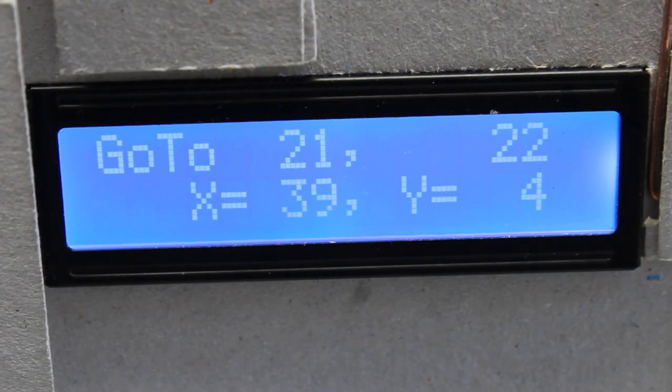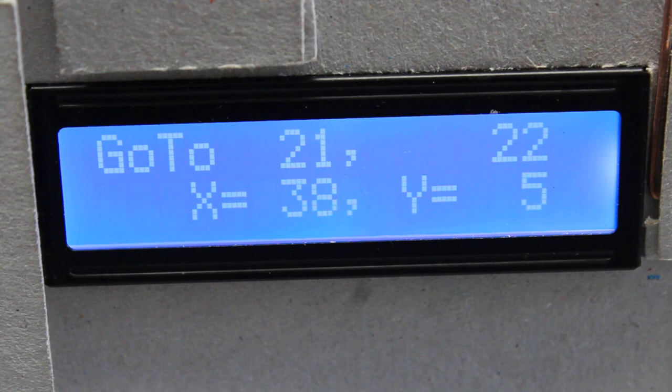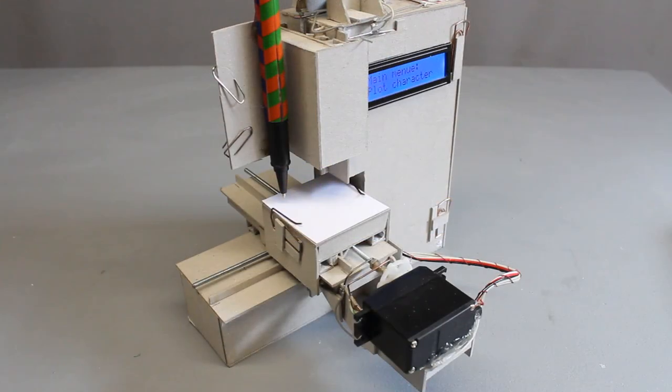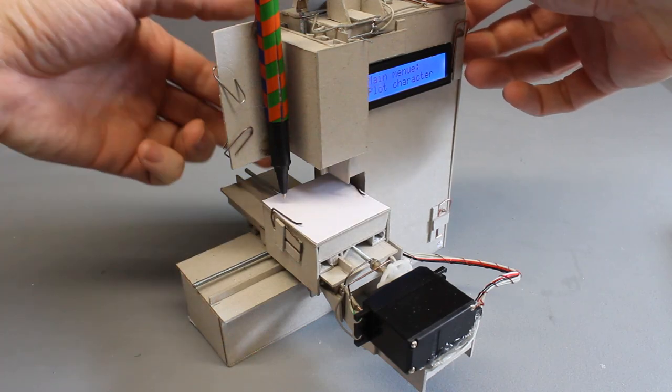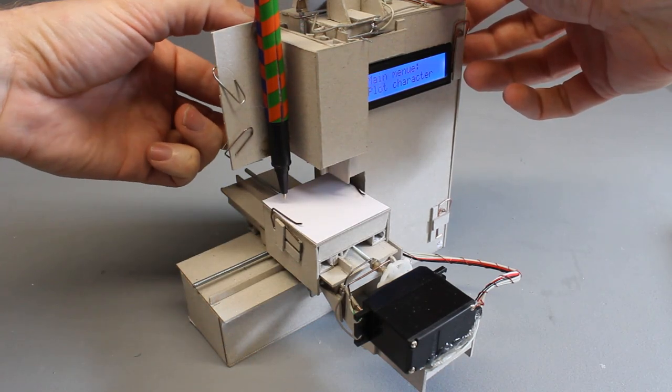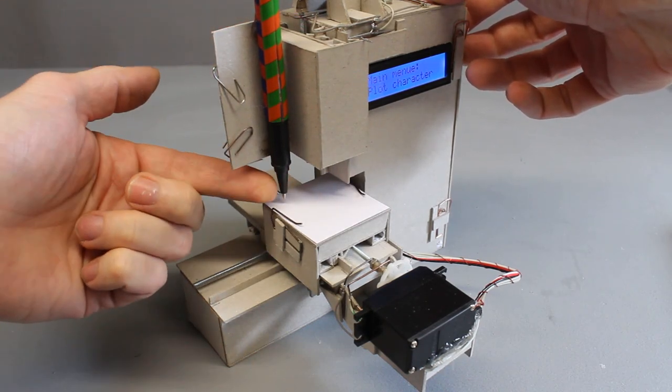First of all you can watch the microcontroller calculating all points the pen is driven to, and secondly, each CNC has at least some backlash or the mechanics bends under load. Those weak points can be identified with your naked eye at this construction.